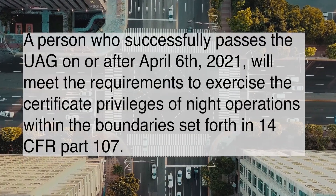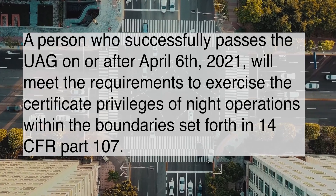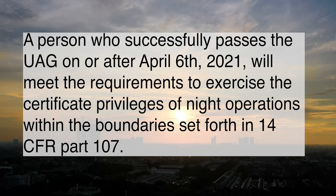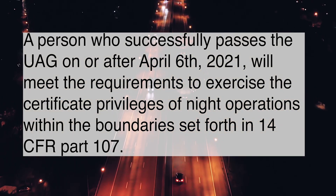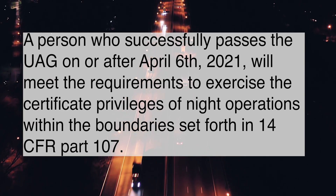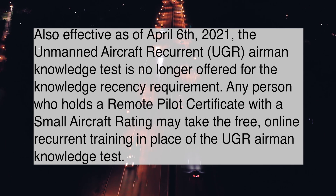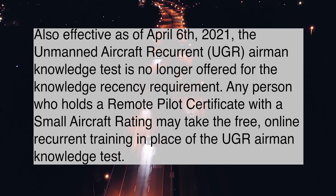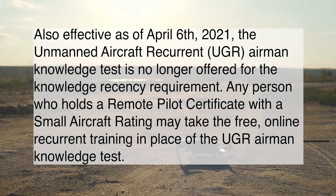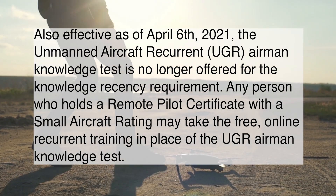A person who successfully passes the UAG on or after April 6th, 2021, will meet the requirements to exercise the certificate privileges of night operations within the boundaries set forth in 14 CFR Part 107. Also effective as of April 6th, the Unmanned Aircraft Recurrent Airman Knowledge Test, or UGR, is no longer offered for the knowledge recency requirement.